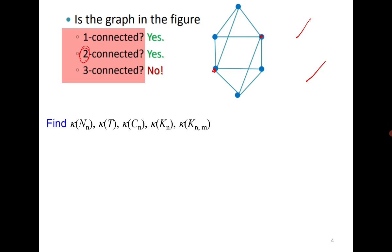Quickly try to find the vertex connectivity of the null graph, tree, cycle graph, complete graph, and complete bipartite graph. For the null graph, it is 0. For a tree, we know that every tree has a cut vertex as well as a cut edge, and therefore its vertex connectivity is 1. One exception: if we draw K2, it is also a tree, and if we delete a vertex it does not become disconnected. We will discuss its case when we discuss the vertex connectivity of the complete graph Kn.